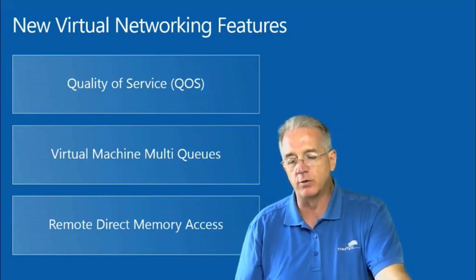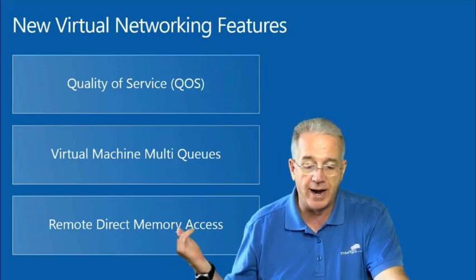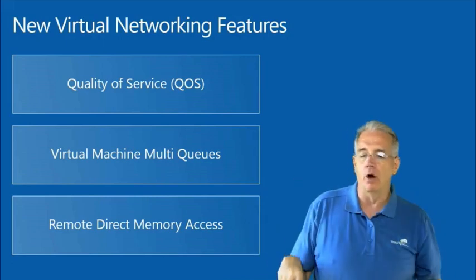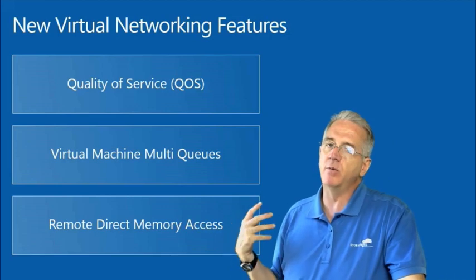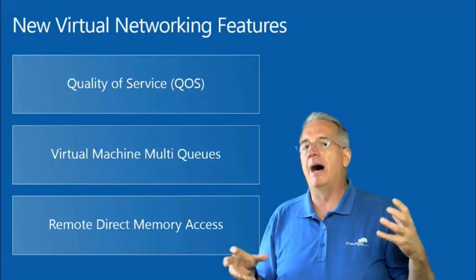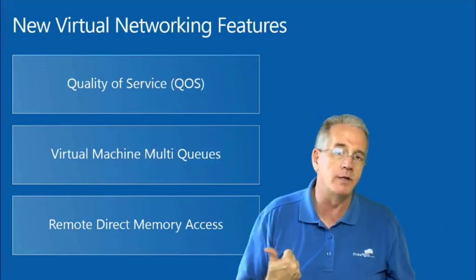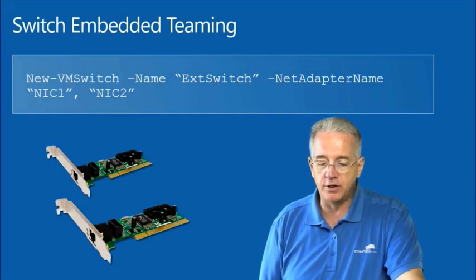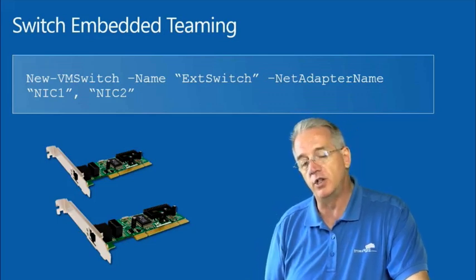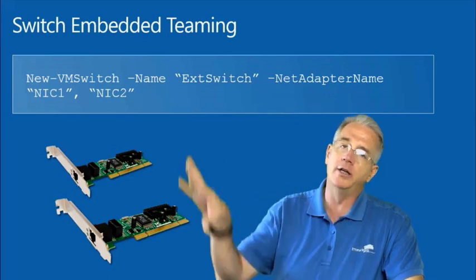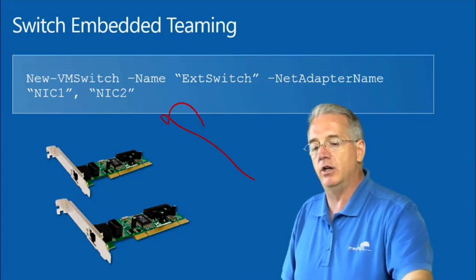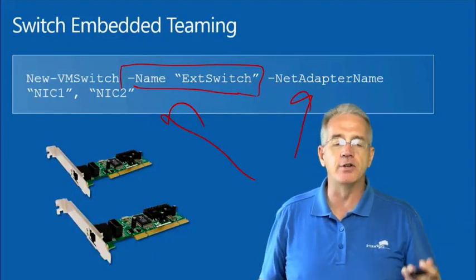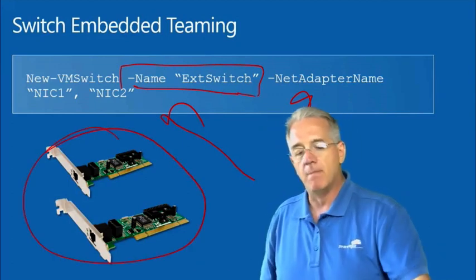We also have RDMA — Remote Direct Memory Access, also known as SMB Direct. This allows very low resource utilization when sending and receiving packets without heavily burdening the host OS. However, NIC teaming in older Windows versions didn't support RDMA. So now there is Switch Embedded Teaming, or SET, which allows remote direct memory access, virtual machine queues, and network teaming all within a virtual switch. You enable it by creating a new VM switch, giving it a name, and adding adapters, as long as the network adapters support it.